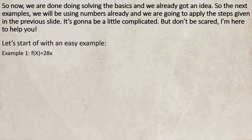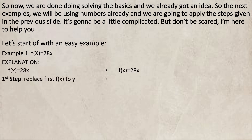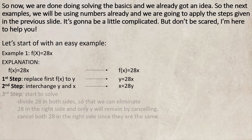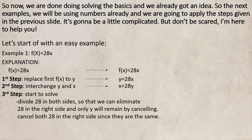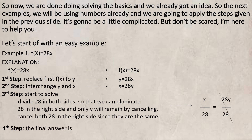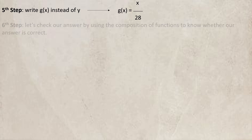Example number 1: f(x) = 28x. Replace first f(x) with y, then it will become y = 28x. Interchange y and x, so it will become x = 28y. Divide 28 on both sides so that we can eliminate 28 on the right side, and only y will remain by cancelling. x/28 = 28y/28. Cancel both 28 on the right side since they are the same. The final answer will be x/28 = y. Write g(x) instead of y, so it will become g(x) = x/28.